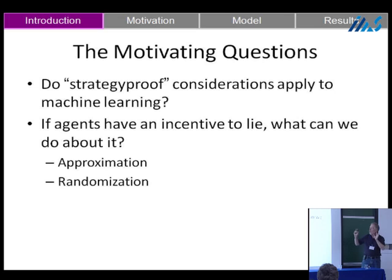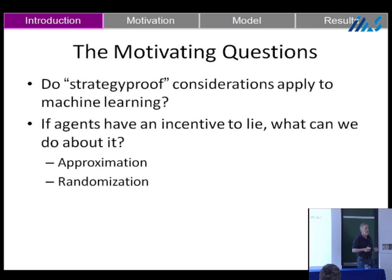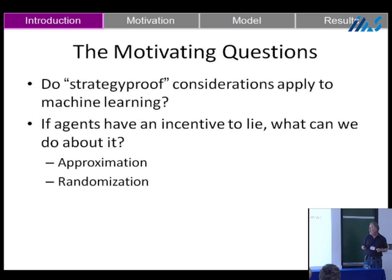A quick outline: I'll give an example of strategy-proof classification, discuss real-world motivation, present our model and previous results, then present positive and negative results including a lower bound on strategy-proof classification, the weighted case, and if time permits, generalization to probability distributions. The motivating question is: do strategy-proof considerations apply to machine learning? We want to see whether we can impose strategy-proofness on a machine learning scenario and, if agents have an incentive to lie, what we can do about it — using approximation, randomization, and more.